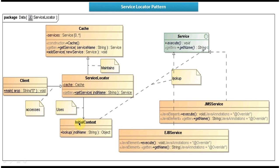And below you can see Initial Context. It has a Lookup method. Based on the JNDI name you passed, it will do the lookup of the Service object in the JNDI Registry Service and it will return that Service object to the Service Locator. The next important class is Service Locator. You have to pass the JNDI name to its method. This method will first check if the Service object is available in the Hash by calling the GetService method. If the Service object is available in the Hash, then this method will return the Service object to the client.